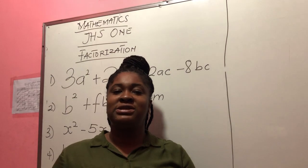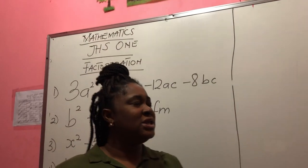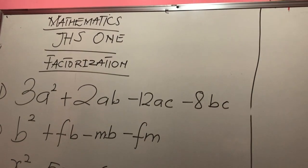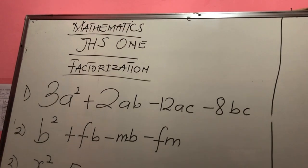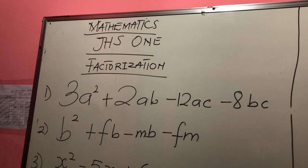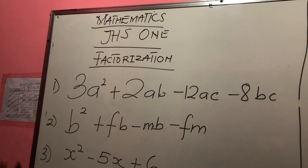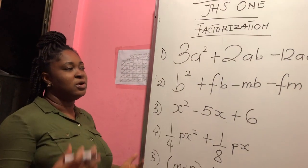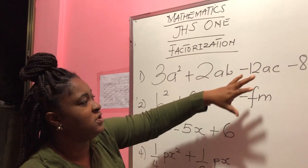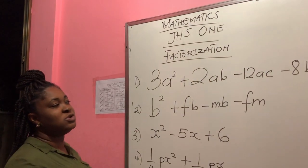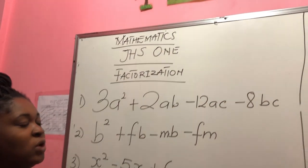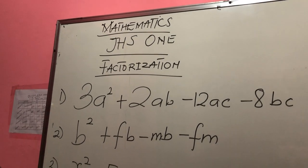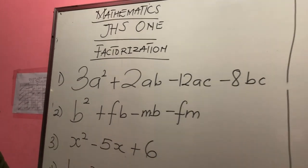We move to the next topic. Now, what is factorization about? The first thing — the main thing under factorization — is grouping. Grouping numbers with the same variables. But when I solve the first question, then I can be able to explain further to you what factorization is about. Let me take the first question.